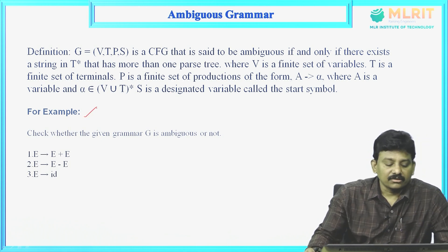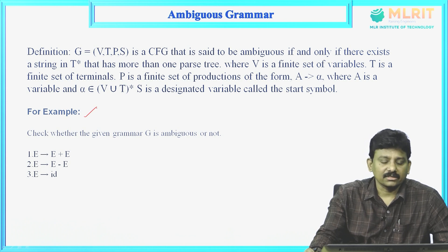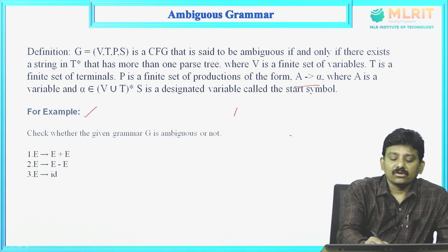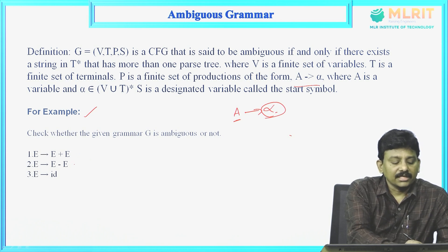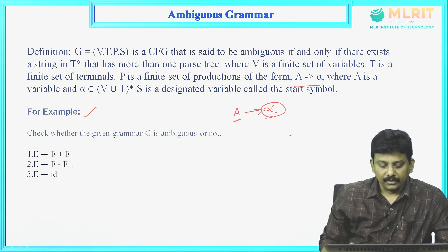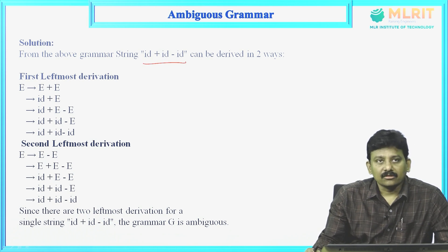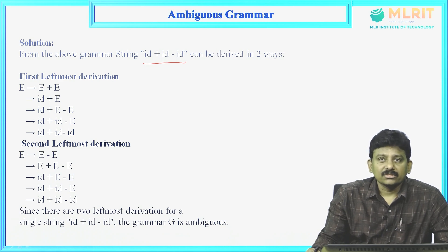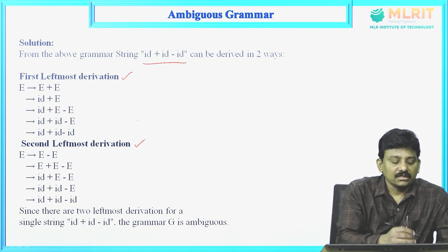Example: check whether the given grammar G is ambiguous or not. G is a context-free grammar, a four-tuple (V, T, P, S) — V is a set of non-terminals, T is a set of terminals, P is a set of production rules, S is the start symbol. The given rules are: E derives E plus E, E derives E minus E, E derives id. For the string id plus id minus id, we have to show that the given grammar is ambiguous. We can show this by constructing more than one leftmost derivation. So I will construct the first leftmost derivation and the second leftmost derivation — two different LMDs for the same string id plus id minus id.